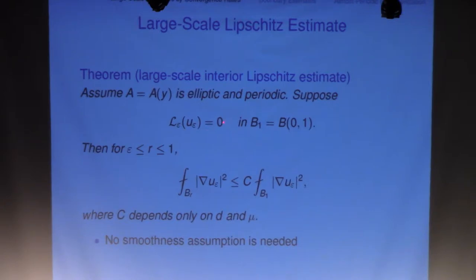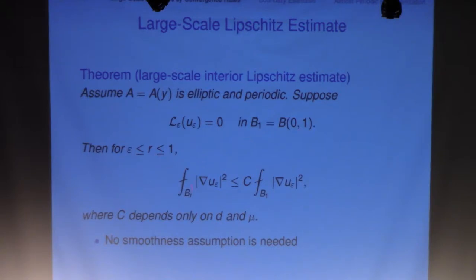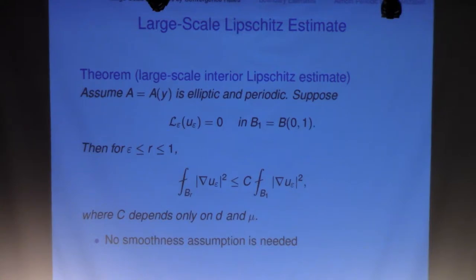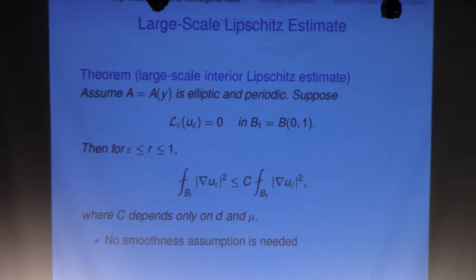For simplicity, assume the right-hand side is zero. You have a solution in a unit ball, and you look at the L2 average of the gradient of the solution on the ball of radius R, where R is between epsilon and 1. The most important case is R equal to epsilon. Once you have that, the remaining range follows. It's bounded by the L2 average of the gradient on the ball of radius 1. There are two steps: first is the compactness giving one improvement, and second uses induction to iterate the gain.